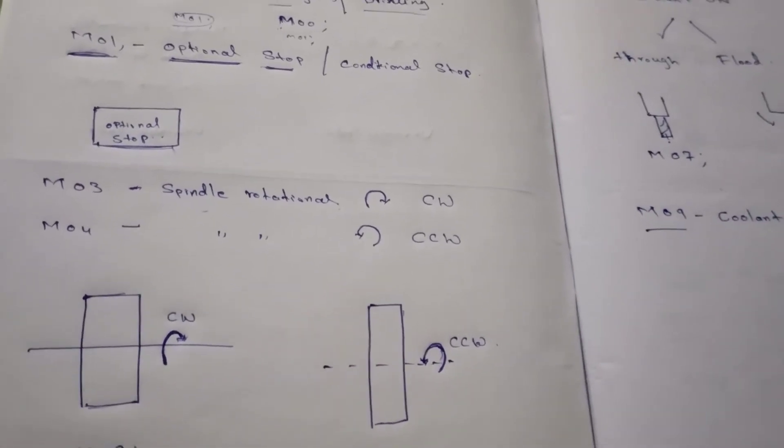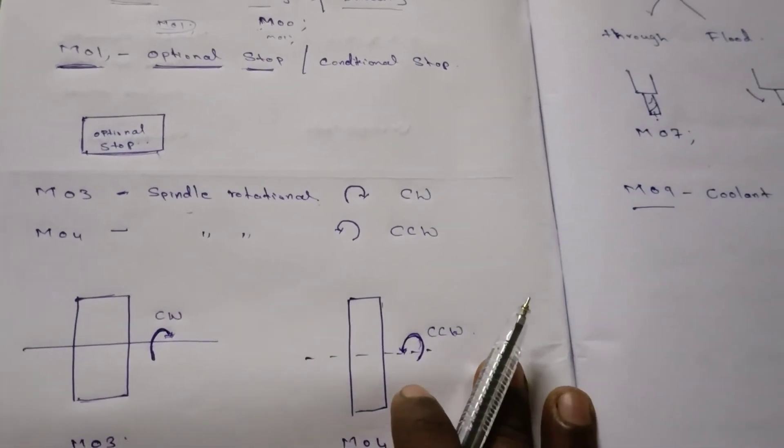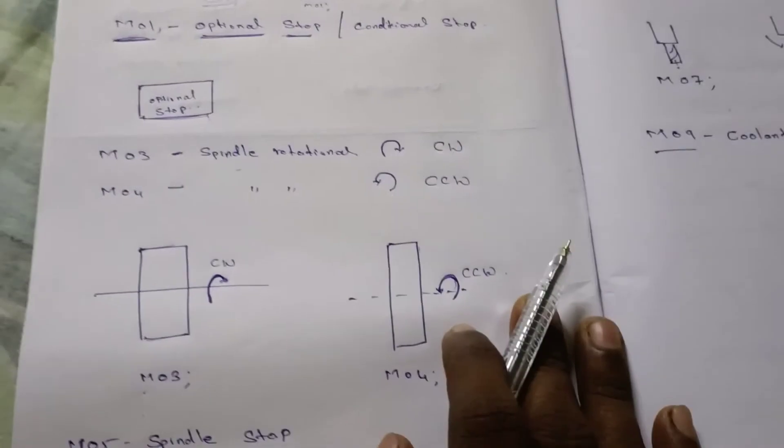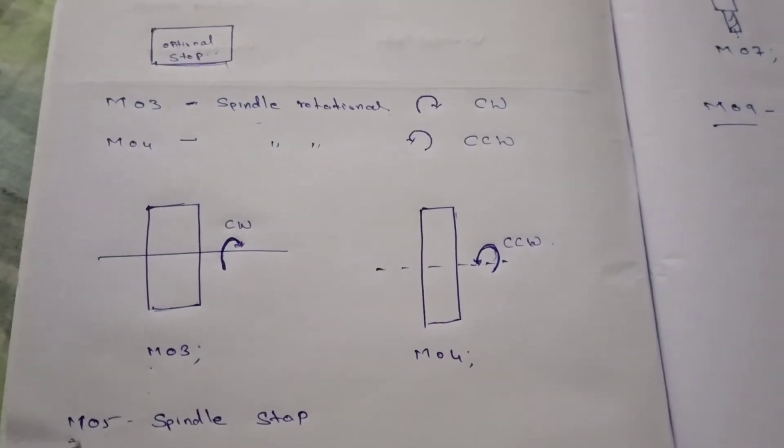For rotation of spindle, we are using M03 and M04. To stop the spindle, we use M05. M05 refers to spindle stop.